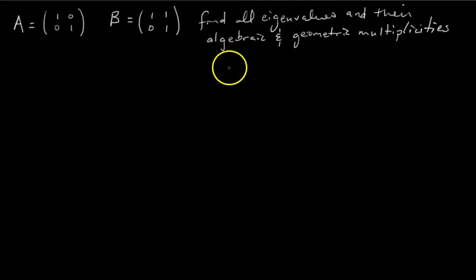Alright, let's talk about multiplicities. So as you guys know, a given matrix is going to have some eigenvalues and then the new thing is each eigenvalue is going to have an algebraic multiplicity and a geometric multiplicity.